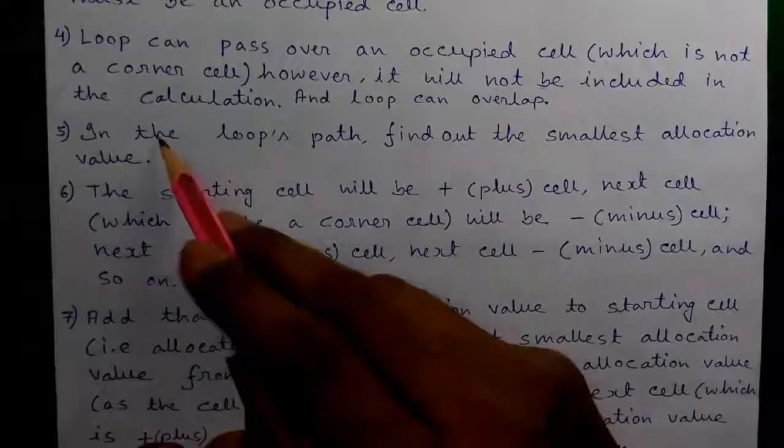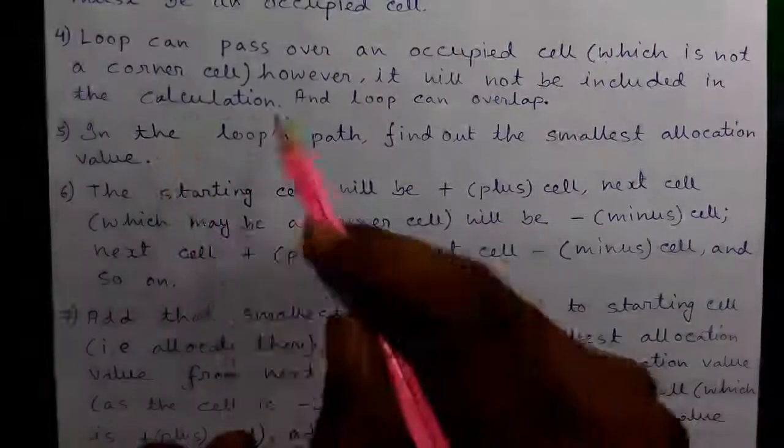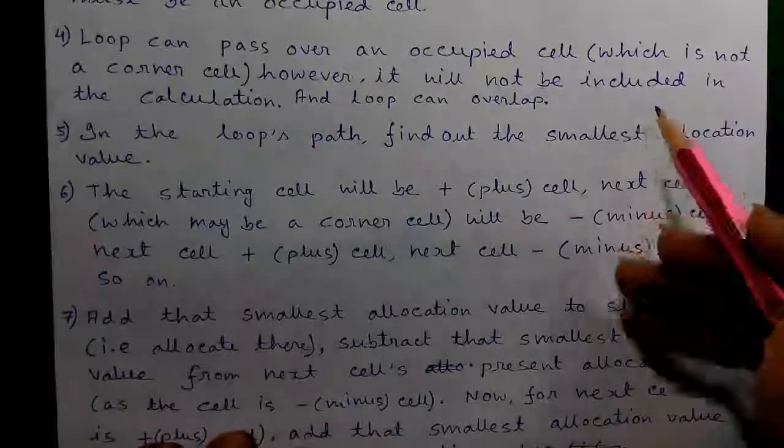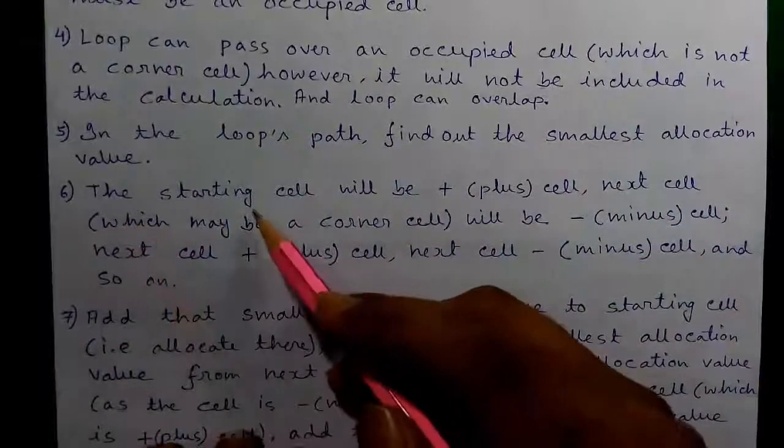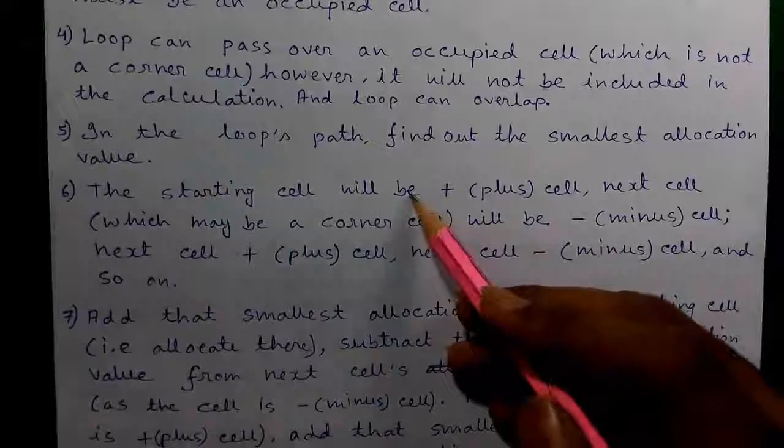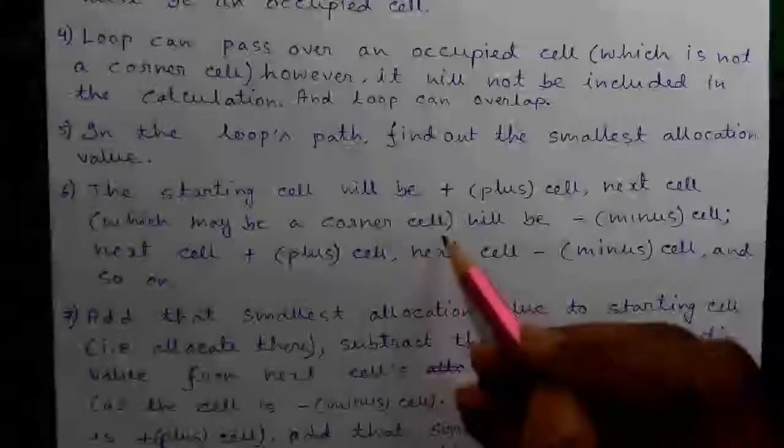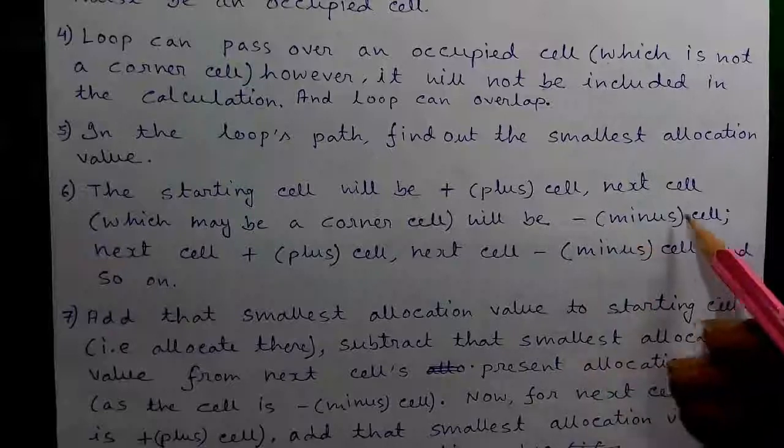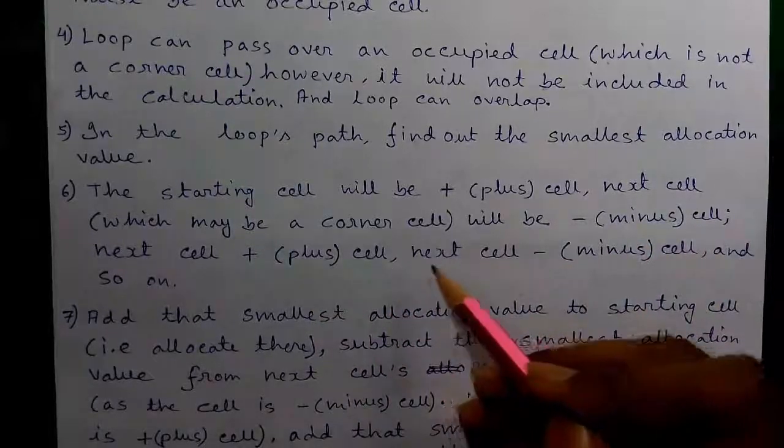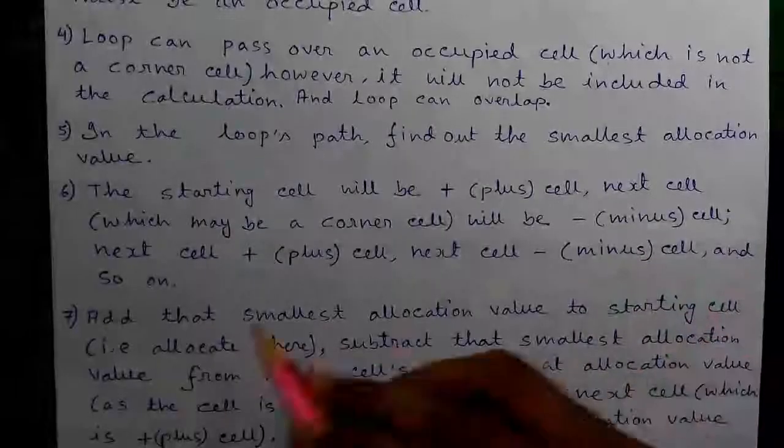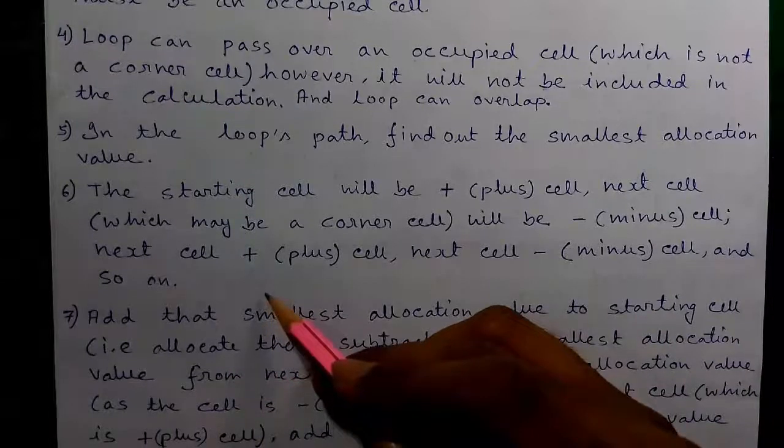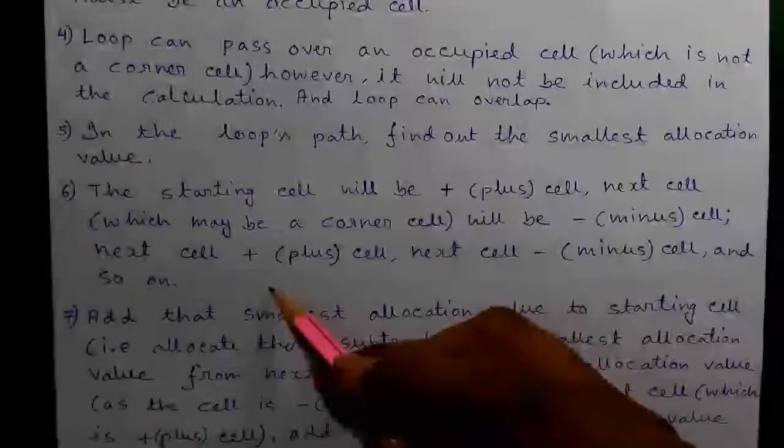Rule 5 - In the loop path find out the smallest allocation value. Rule 6 - Basically these are procedures. The starting cell will be a plus cell. Next cell which may be a corner cell will be a minus cell. Next cell will be a plus cell, next cell minus cell and so on. That is alternating order of plus and minus till the end of the loop.